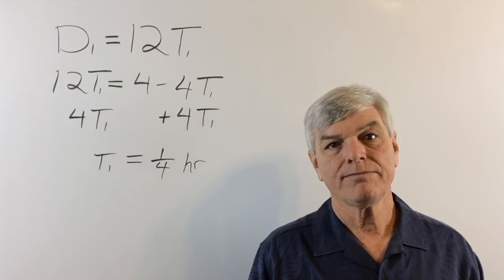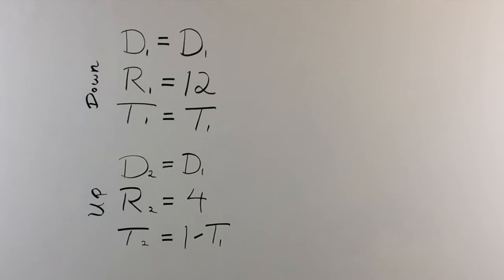T1 equals a quarter of an hour. T2 equals one minus a quarter, which would be three quarters of an hour. And let's see what the question was. After how much time did the campers turn around downstream?